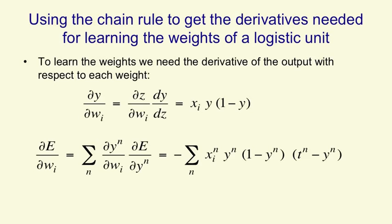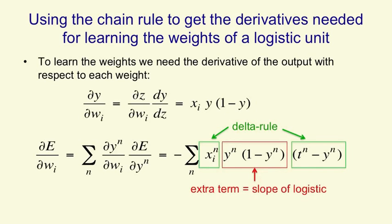We've got dy by dw, and all we need to do is use the chain rule once more and multiply it by dE by dy, and we get something that looks very like the delta rule. So the way the error changes as we change a weight, dE by dwi, is just the sum over all the training cases, n, of the value on an input line, xin, times the residual, the difference between the target and the actual output of the neuron. But it's got this extra term in it, which comes from the slope of the logistic function, which is yn into 1 minus yn. So a slight modification of the delta rule gives us the gradient descent learning rule for training a logistic unit.